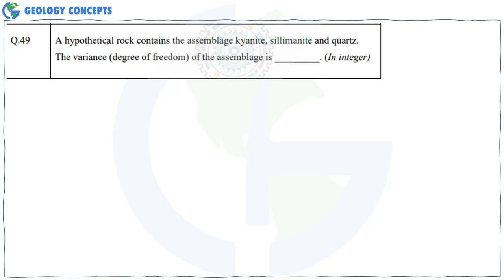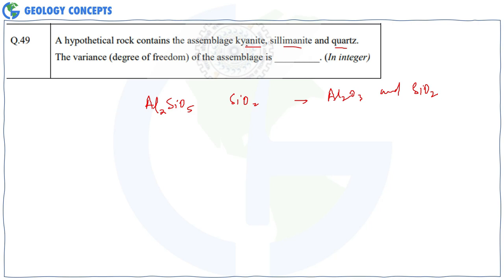Question 49: A hypothetical rock contains the assemblage kyanite + sillimanite + quartz. What is the variance of the assemblage? Kyanite and sillimanite both have the formula Al₂SiO₅; quartz is SiO₂. We have two components (Al₂O₃ and SiO₂) and three phases. By the phase rule: F = C − P + 2 = 2 − 3 + 2 = 1.